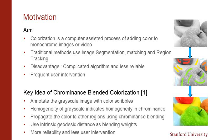In our approach for colorization, we use chrominance blending. The input to the process is a grayscale image and a grayscale image with color scribbles on it. The basic idea is that homogeneity of grayscale indicates homogeneity in chrominance, and we use this to propagate color from colored regions to uncolored regions using chrominance blending. We use intrinsic geodesic distance as blending weights, and results show this is a more reliable technique requiring less user intervention. With just one or two iterations, we arrive at the final desired colored image.